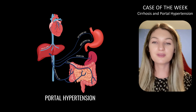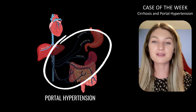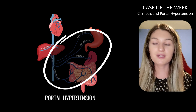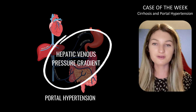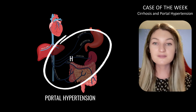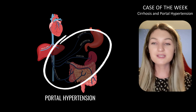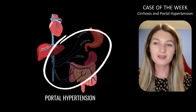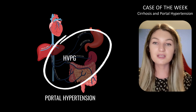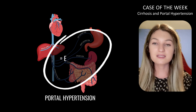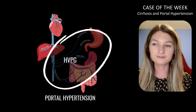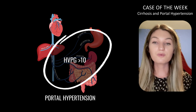Portal hypertension occurs when the pressure gradient in the portal venous system is elevated. This can be assessed indirectly by measuring the hepatic venous pressure gradient or HVPG. In general, an HVPG greater than 5 mmHg is elevated, and clinically significant portal hypertension is defined as an HVPG greater than 10 mmHg.